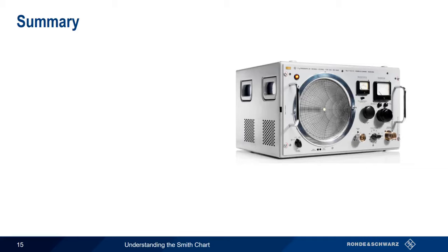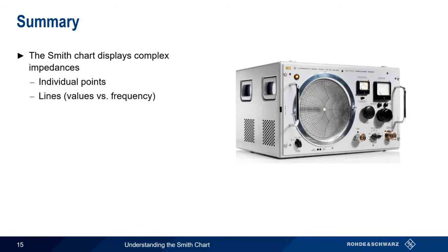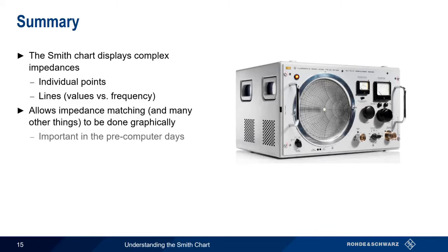Let's summarize what we've learned. First, the Smith Chart is a way of displaying complex impedances. These impedances may be either individual points or lines showing values as a function of frequency. The initial motivation for the creation of the Smith Chart was that it enables impedance matching, and many other things, to be done graphically instead of algebraically. This was particularly important prior to modern computational methods.